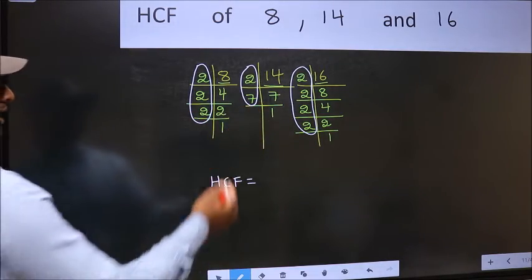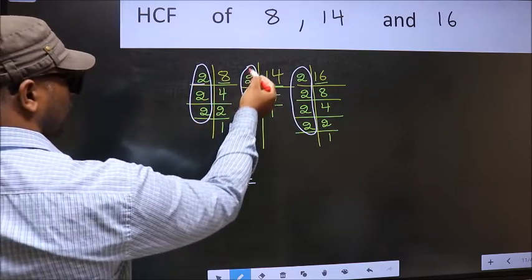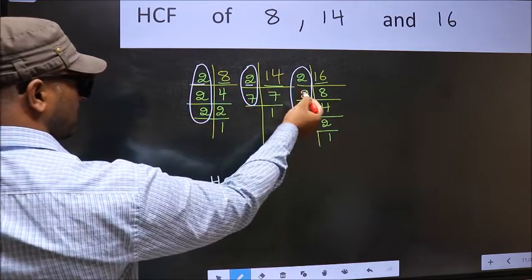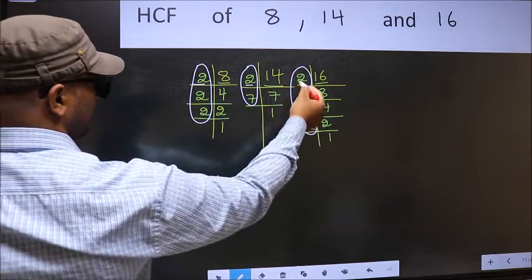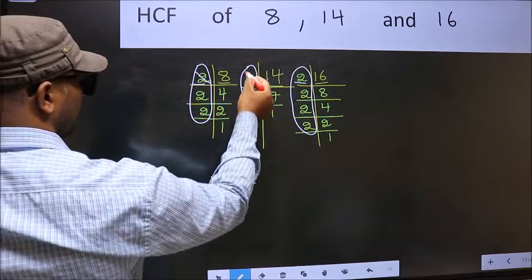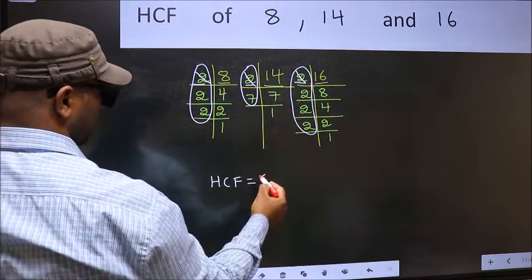Starting with the number 2. Do we have 2 here? Yes. Go to the next place. Do we have 2 here? Yes. So cut 2 right here.